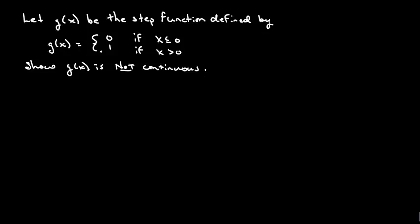we need to take a look at the limits coming from both sides. So I'm going to take the limit as x approaches. Now where they're not continuous is at zero. Let me show you why that is.